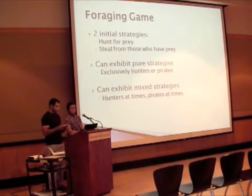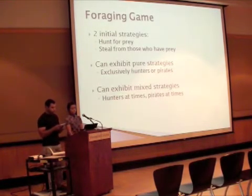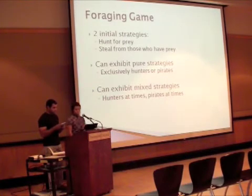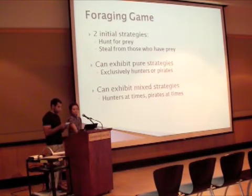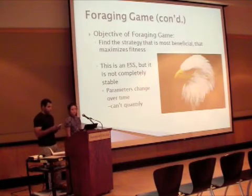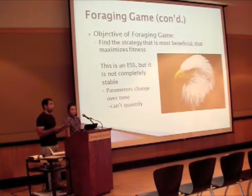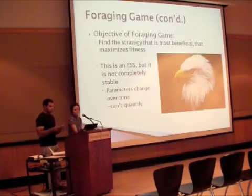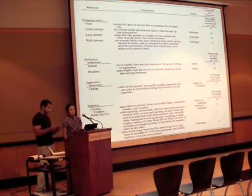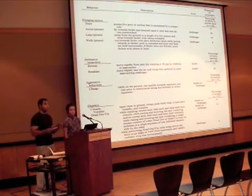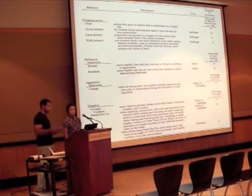The first prediction that the researchers came up with is that the population-wide frequencies of hunting and stealing have been stabilized at the evolutionary stable strategy point, where the payoffs of the two strategies are equal. So you have two groups: the producers, which are the eagles that hunt and secure their food stores, and the scroungers, which are the birds that steal from the producers.